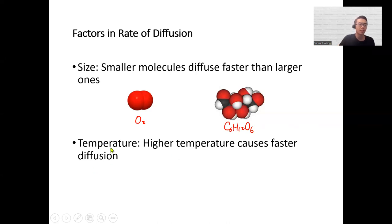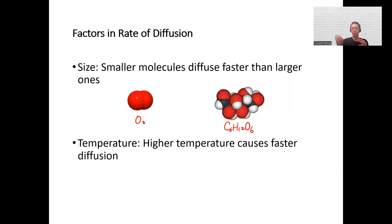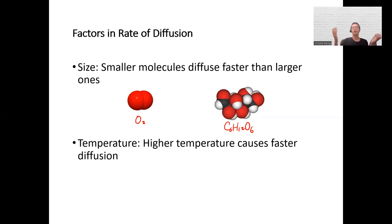Temperature will also affect the rate of diffusion. When it's hotter, molecules are more energetic — they tend to move faster and therefore spread out faster. Think about it: on a hot summer day, if you walk by a dumpster or you're taking your garbage out, you're more likely to smell the bad smell on a hot summer day compared to a cold winter day. That's because the smell diffused faster when it's hotter.